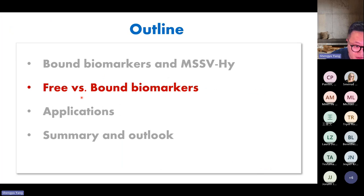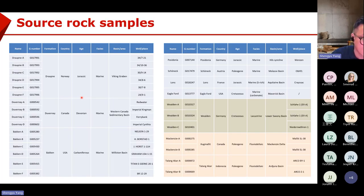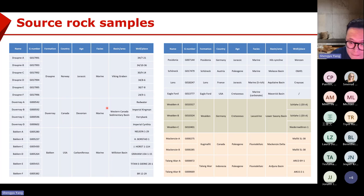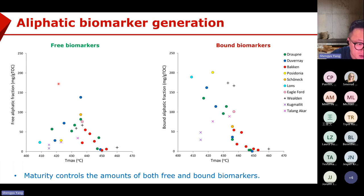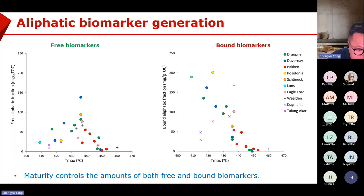In the next part, I'm going to compare the free biomarkers in the rock and the kerogen bond biomarkers, and the free oil biomarkers and the asphaltene bond biomarkers. First, let's check the source rock samples. We have a big database — marine shale in green, lacustrine shale, and some very young delta sediments. For marine shale, we have samples from Norway, Canada, and USA, with different kerogen types and different maturities from immature to highly mature.